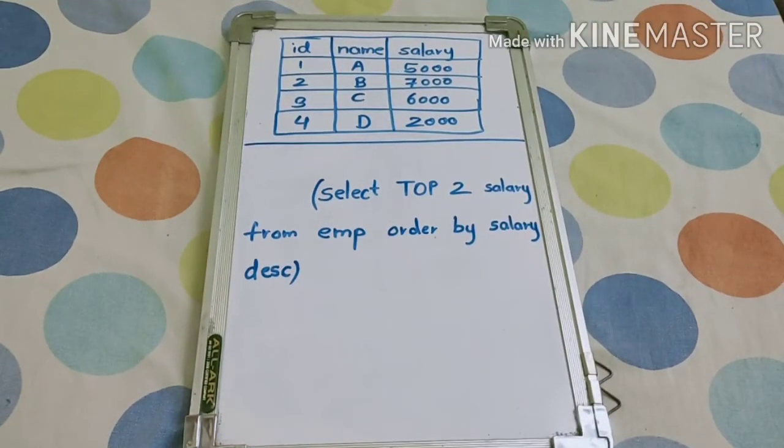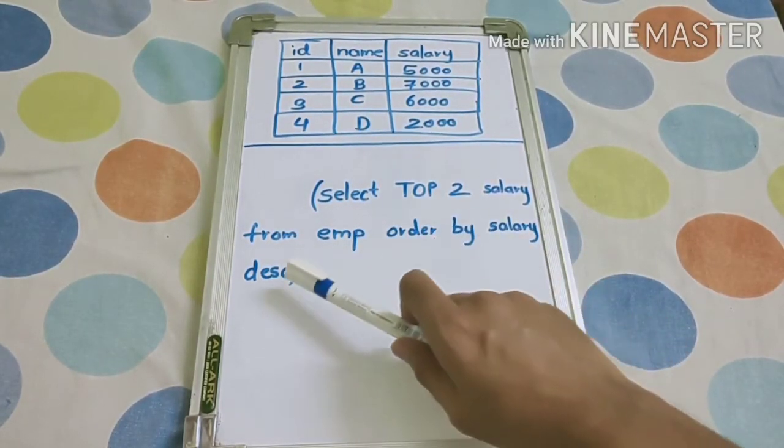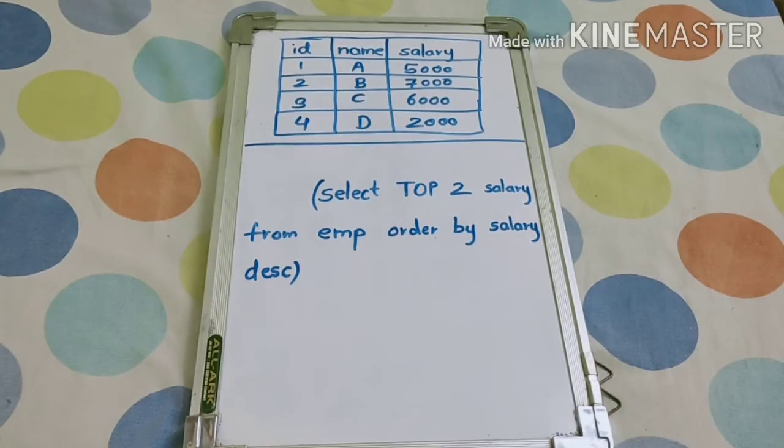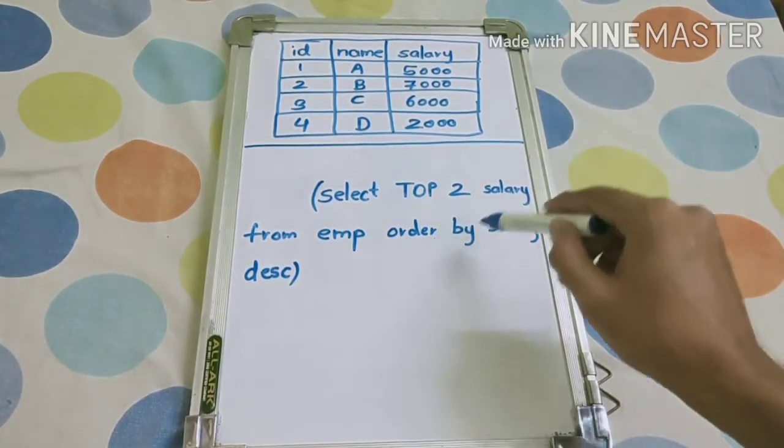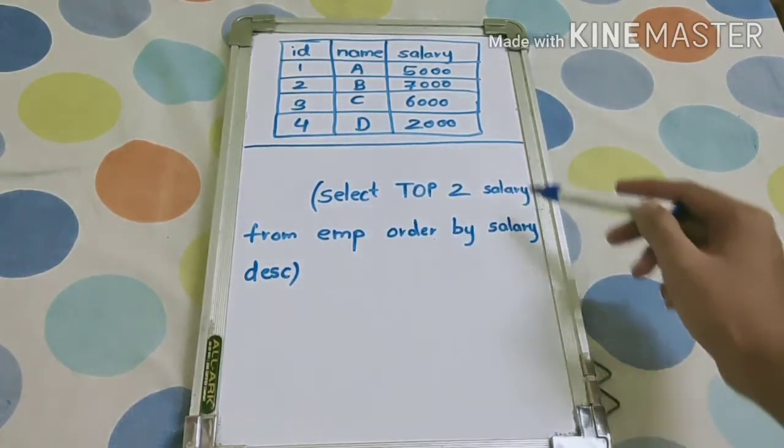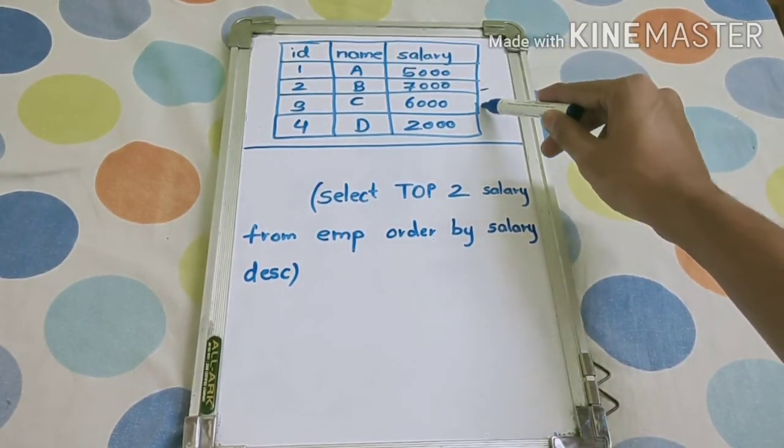Consider that you have been asked to print the second highest salary from this table. You have to write this query first: select top two salary from employee order by salary descending. So what will it print? Select top two means from order by salary in descending order, so first it will print 7000 and 6000.